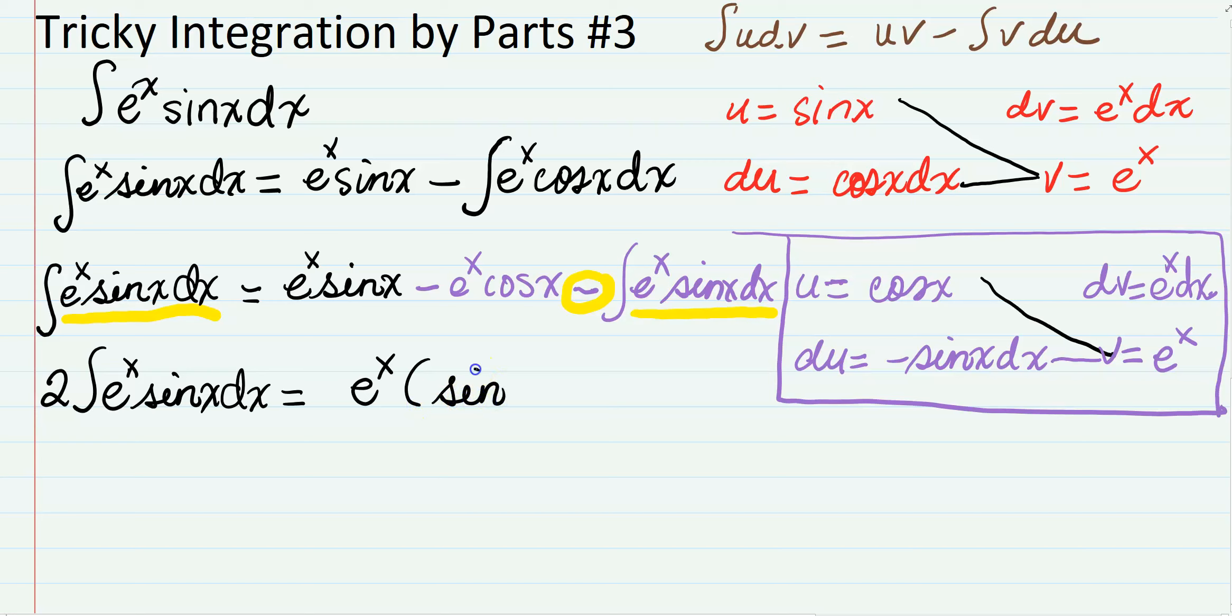We could be fancy and factor out e to the x, and we have sin(x) minus cos(x) left. And what we were looking for, which is the integral of e to the x sin(x) dx, is going to equal this thing on the right hand side divided by 2: e to the x times (sin(x) minus cos(x)) all divided by 2 plus C.